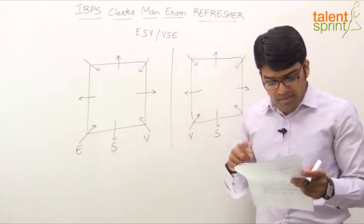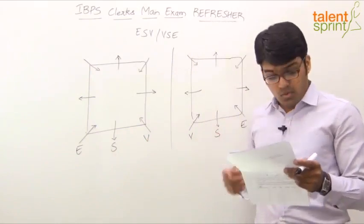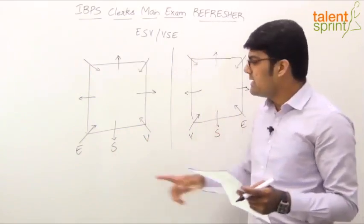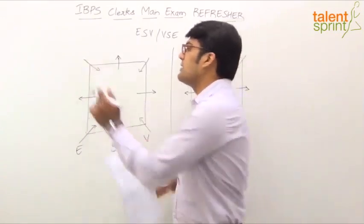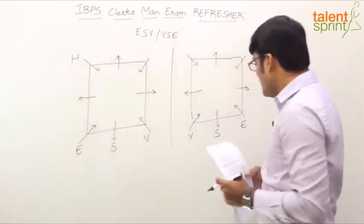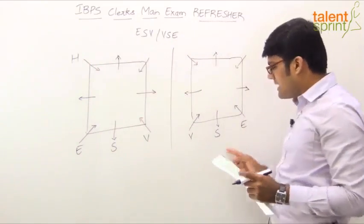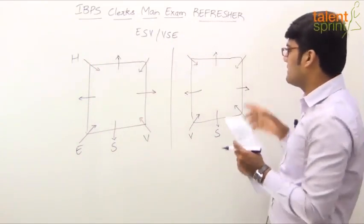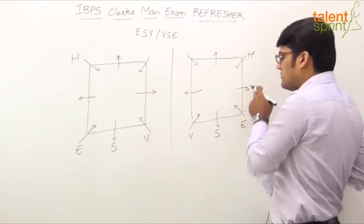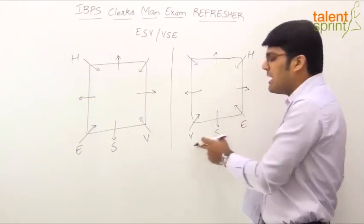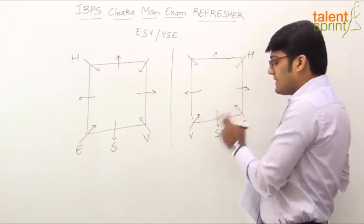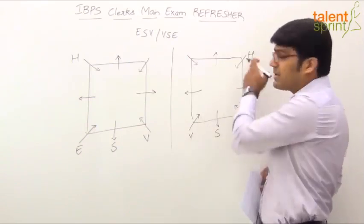Next point. One person sits between E and H. Only one person sits between E and H. E is here. Only one person sits between E and H. H cannot come on this side. H has to go there. So, H comes here. Only one person sits between E and H. Again, H cannot come here. So, H has to go there.